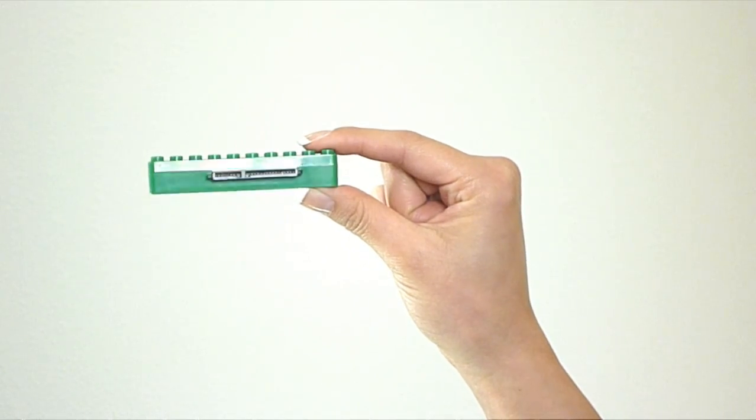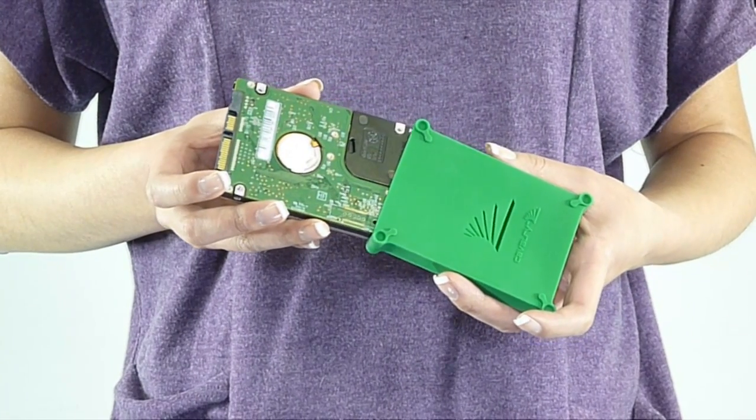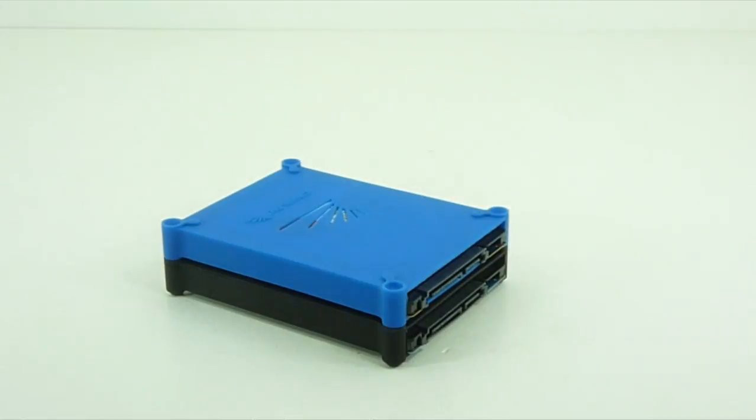This is a SuperSpeed hard drive dock. This is a protective rubber hard drive sleeve. Put them together and you get the stackable Bulldog SuperSpeed pocket dock.